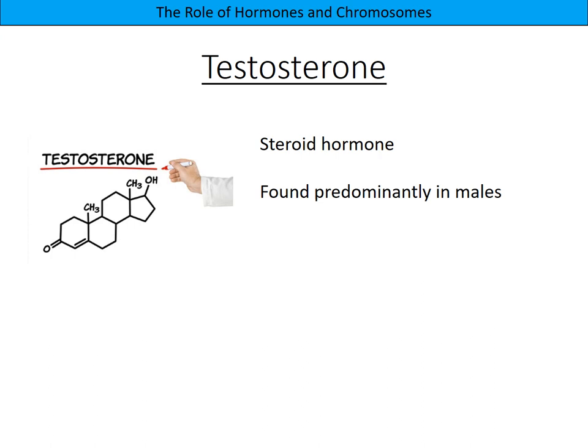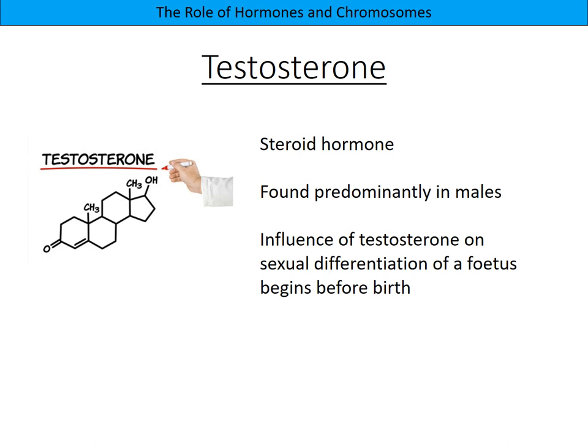Testosterone is a steroid hormone found predominantly in males, however a small amount is also produced in females. The influence of testosterone on sexual differentiation of a fetus before birth is really important. If the fetus is due to be a male, at around that three-month stage during pregnancy there would be a surge of testosterone, leading the fetus towards developing the external genitalia of a male. So testosterone is really important even before birth.